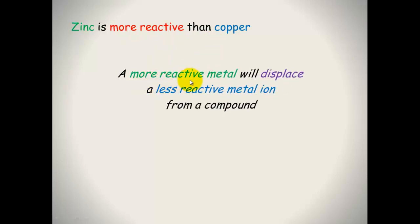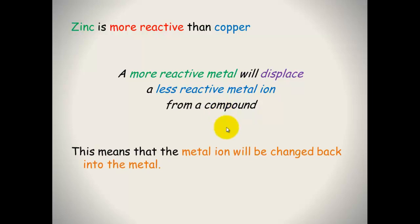A more reactive metal, by definition, will displace a less reactive metal ion from a compound. This means that the metal ion will be changed back into the metal, and that's exactly what we saw with the copper ion.